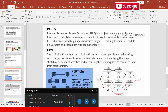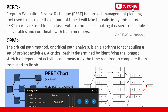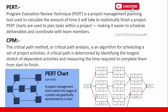PERT stands for Program Evaluation and Review Technique. It is a project management planning tool used to calculate the amount of time it will realistically take to finish a project. PERT charts are used to plan tasks within a project, making it easier to schedule work and collaborate and coordinate with team members. Here I have shown a small example network diagram of a PERT chart.